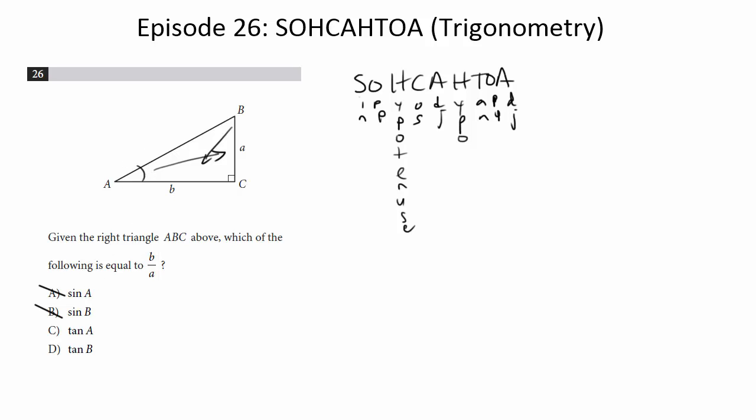How about tangent of A? So tangent is opposite over adjacent. So it's going to be A over B. Close.